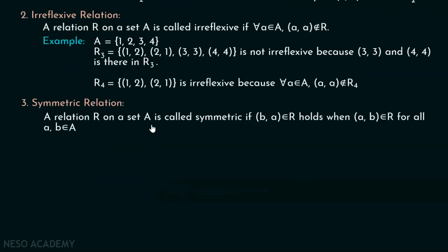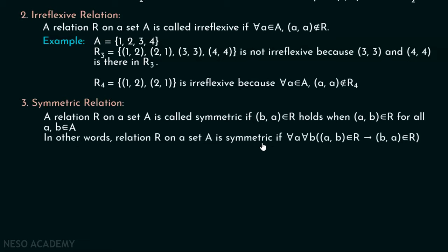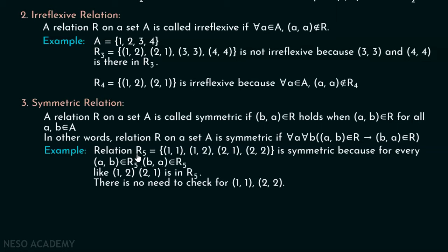Now let's discuss the third type of relation, that is symmetric relation. A relation R on a set A is called symmetric if (B, A) belongs to R whenever (A, B) belongs to R, for all A, B belonging to A. If (A, B) belongs to R is true, then (B, A) belongs to R must also be true — this is called symmetric. In other words, relation R on a set A is symmetric if for all A, for all B: (A, B) belonging to R implies (B, A) belonging to R.